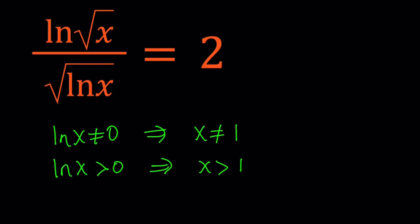So let's go ahead and cross-multiply now. That gives us ln square root of x equals 2 times square root of ln x. I can write the x inside the parentheses, but it's usually understood. ln x means ln of x and the x is inside the parentheses.